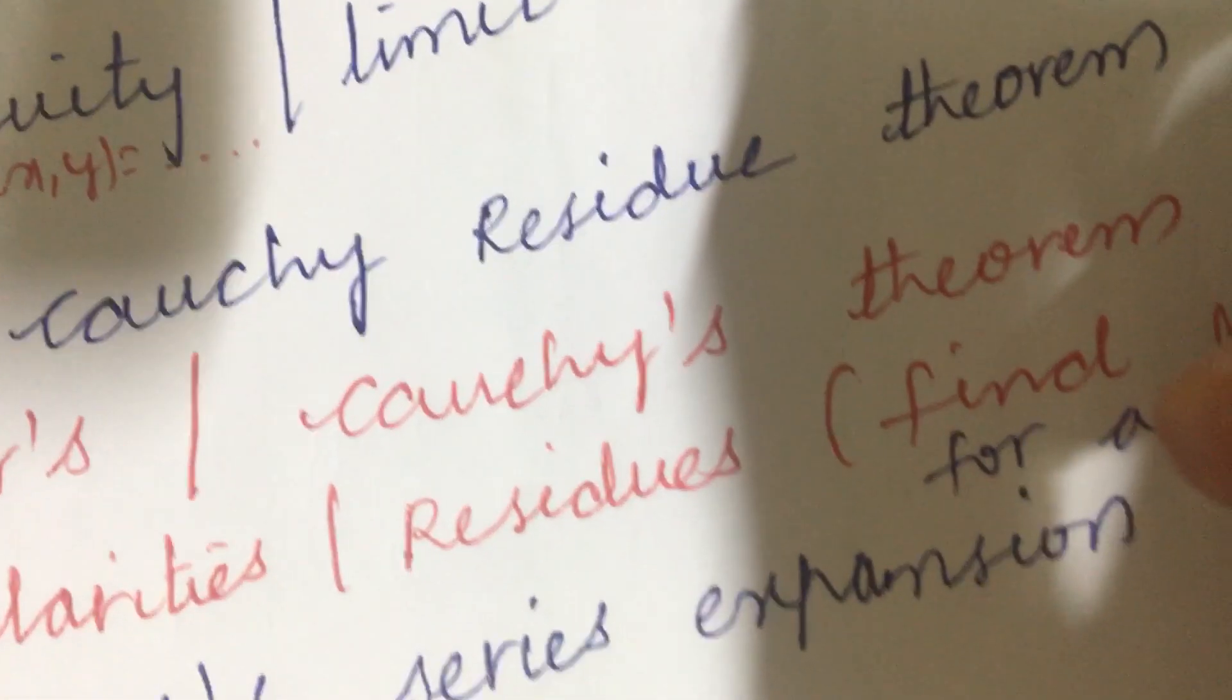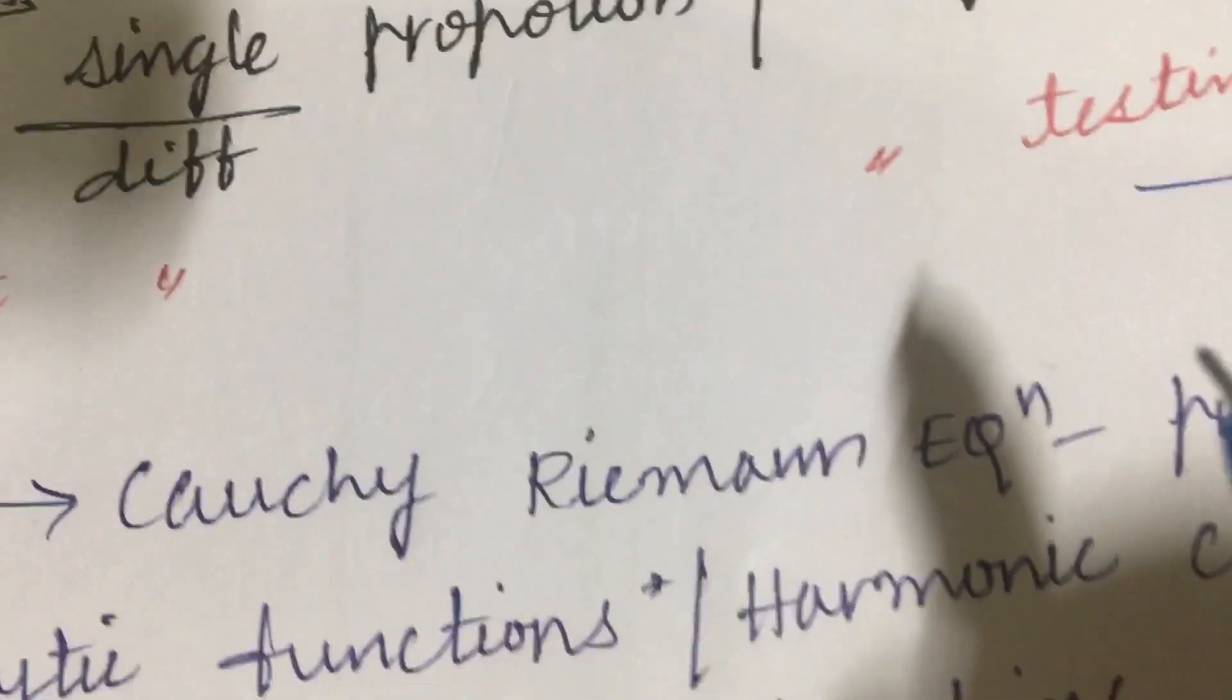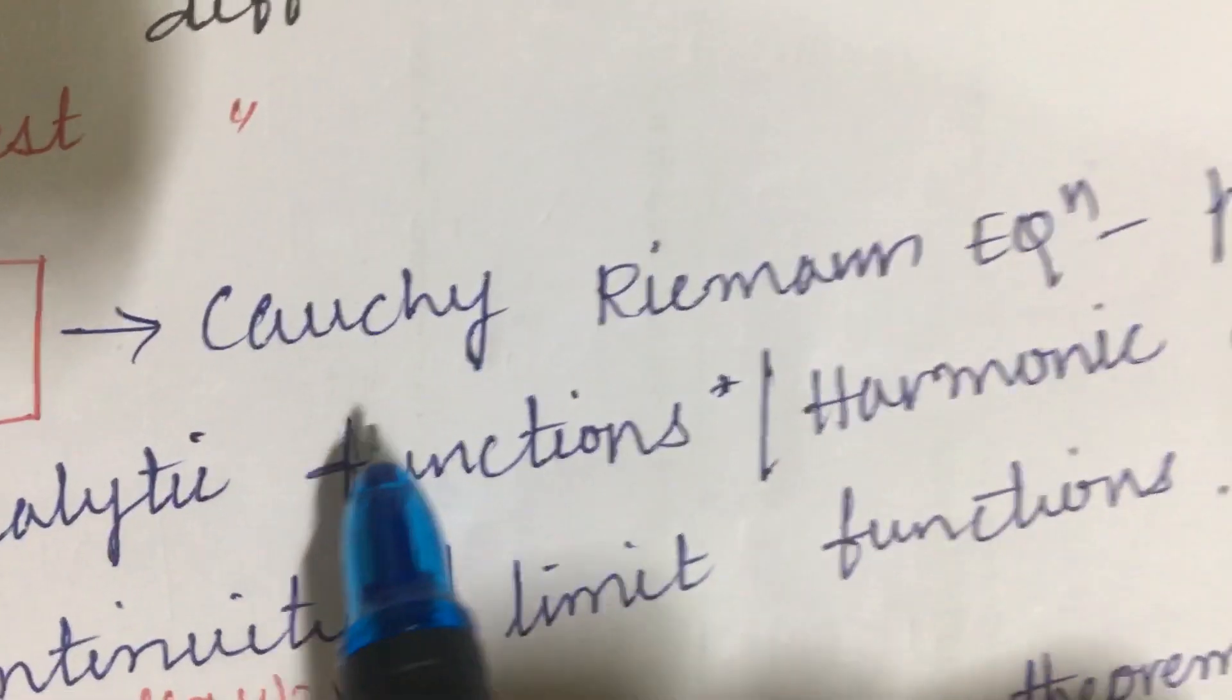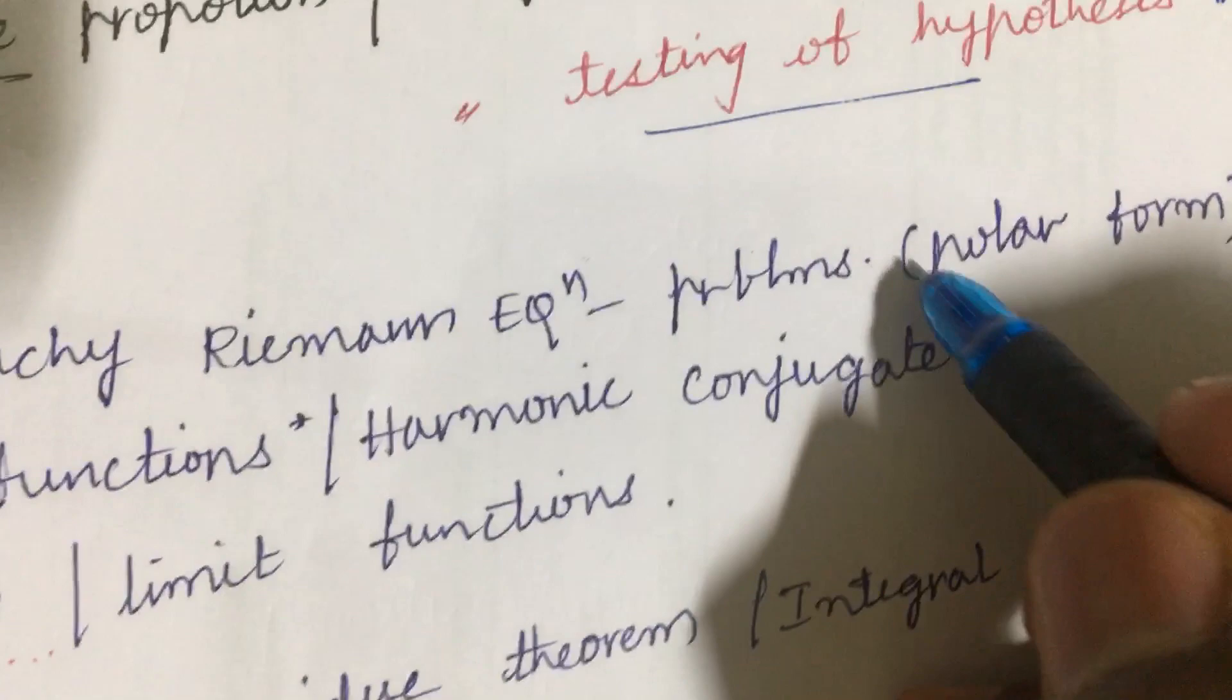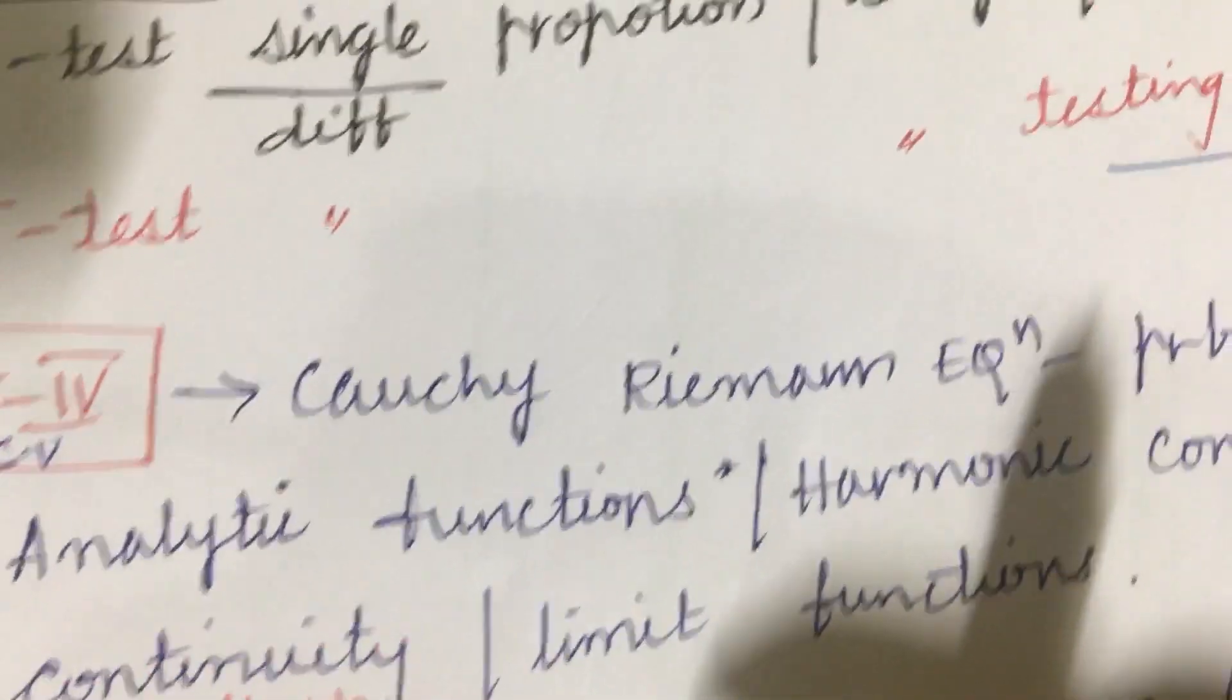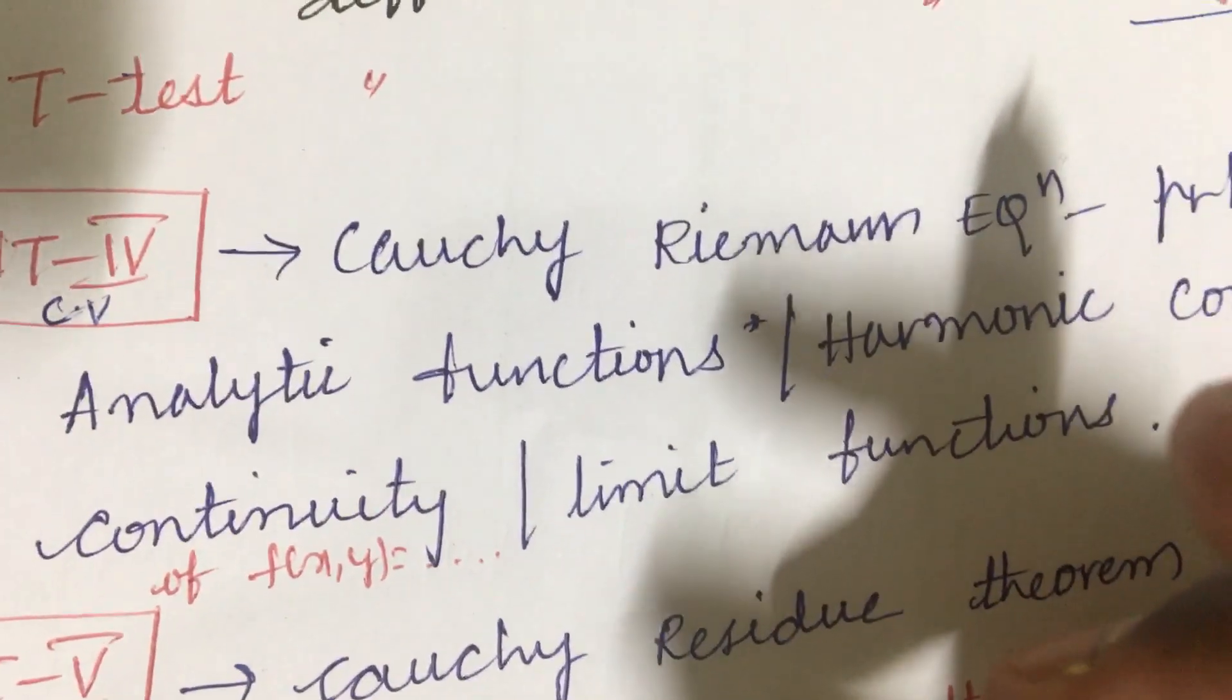The unit 4 and unit 5 covers the complex variables, whereas unit 2, 1, 3 is all related to probability and statistics. The Cauchy-Riemann equation problems in the polar form is a gunshot question where you are going to get only one question or one and a half question sometimes from the unit 3 and the remaining one and a half question may be from unit 4.